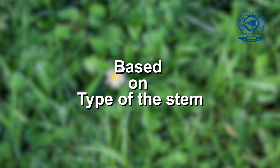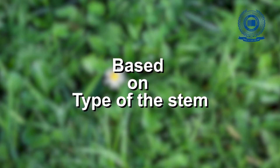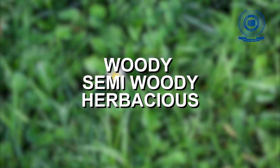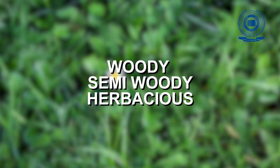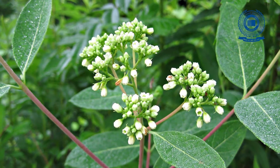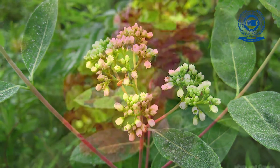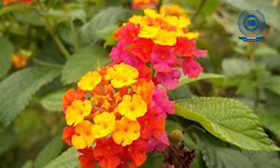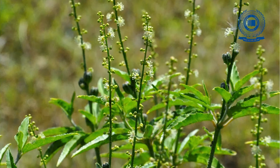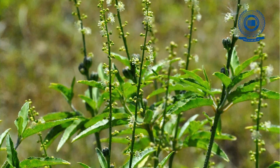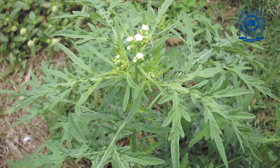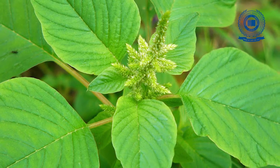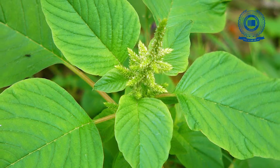Based on the nature of stem: based on the development of bark tissues on their stem and branches, weeds are classified as woody, semi-woody, and herbaceous. Woody weeds include shrubs and undershrubs, collectively called brush weeds. Example: Lantana camara. Semi-woody weeds — example: Croton. Herbaceous weeds have green succulent stems and are of most common occurrence around us. Example: Amaranthus viridis.